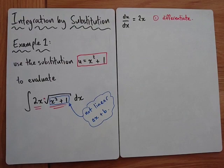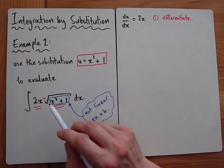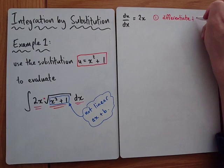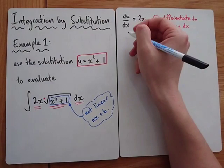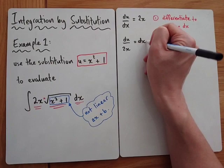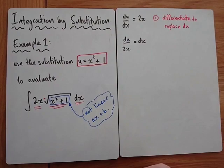We're doing that because we need to write everything in terms of u — we need to get rid of all the x's but we also need to remove the dx. Because if we're moving into the world of u, we need that to be a du. So if I rearrange: du over 2x equals dx.